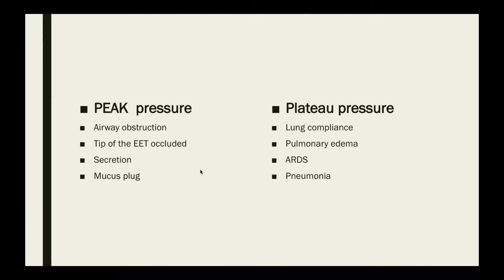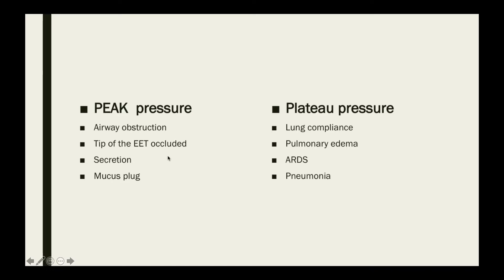So what can actually increase the peak pressure? As we discussed, resistance in the airway increases the peak pressure. How can the airway become obstructed? It can be due to secretions in the airway, a mucus plug, or sometimes the endotracheal tube might get occluded — all of which increase the resistance in the airway and cause the peak pressure to increase.